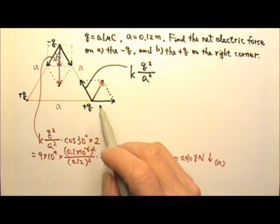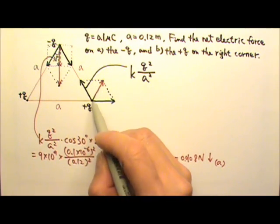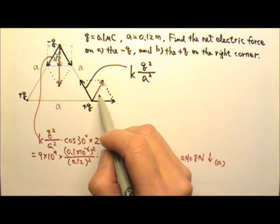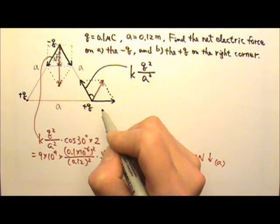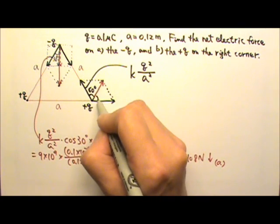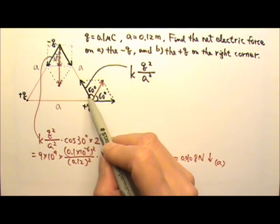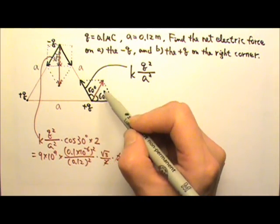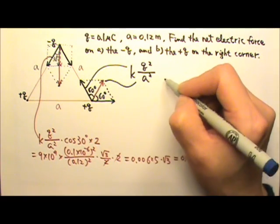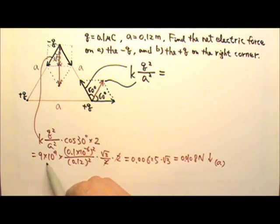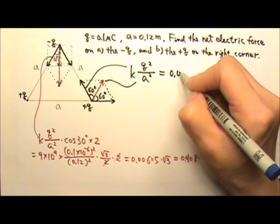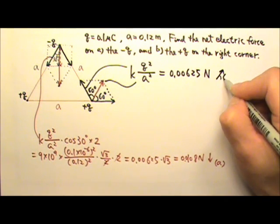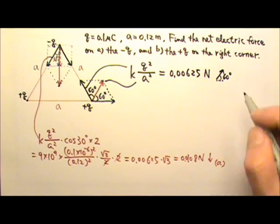In this case we have an equilateral triangle, so this angle is 60 degrees, making the interior angle of the parallelogram 180 − 60 = 120 degrees, leaving 60 degrees on each side. Since both sides of the parallelogram are equal, this forms two equilateral triangles, meaning the diagonal — the net force — has exactly the same magnitude as the individual forces: kQ²/A². Plugging in the numbers gives 0.00625 newtons, directed at a 60-degree angle. That's the answer for part B.